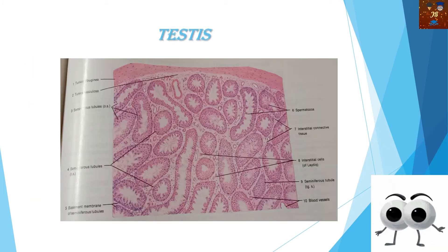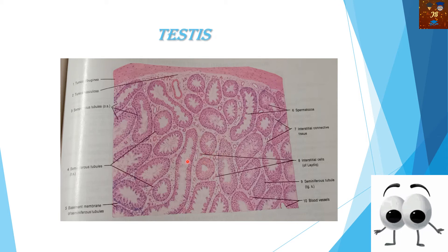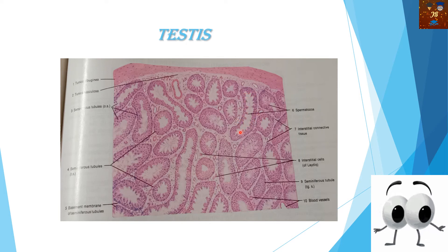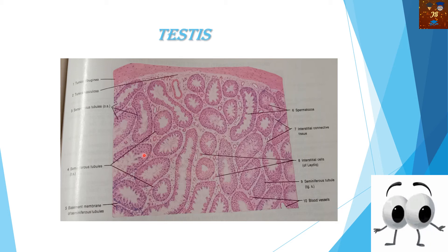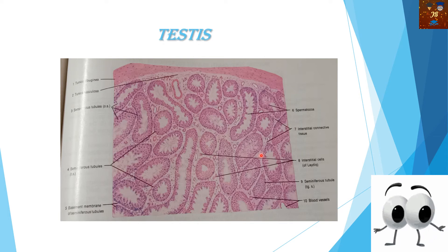Our next section is the testis. You can see that there are lots of seminiferous tubules. All of these are seminiferous tubules, and the spermatozoa — see here, spermatozoa — are arranged inside the seminiferous tubules. Each and every seminiferous tubule contains spermatozoa. So this is the first identifying character: the presence of seminiferous tubules along with the spermatozoa.